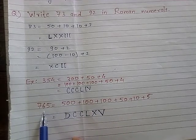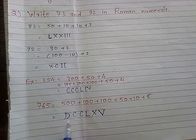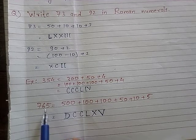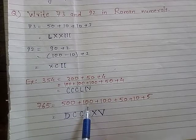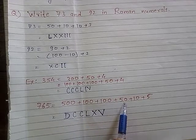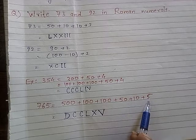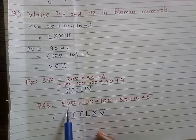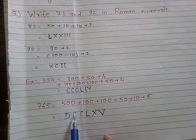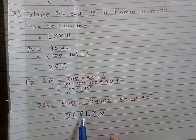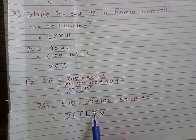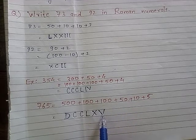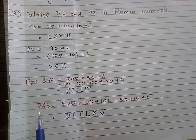Which symbol will we use for 765? We break it down as 500 plus 100 plus 100 plus 50 plus 10 plus 5. D is used for 500, C for 100, C for 100, L for 50, X for 10, and V for 5. So 765 is written as DCCLXV.